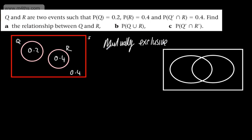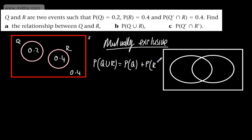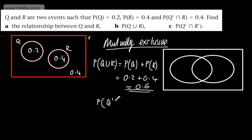Since Q and R are mutually exclusive, the probability of Q union R equals the probability of Q plus the probability of R, so 0.2 plus 0.4 gives 0.6. The probability of not-Q and not-R is 1 minus 0.6, which equals 0.4, or two-fifths.